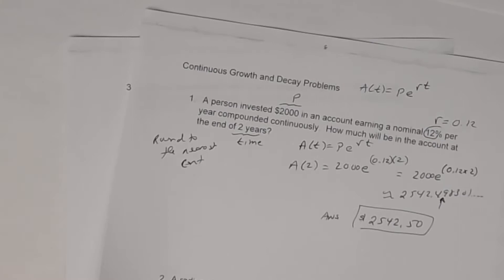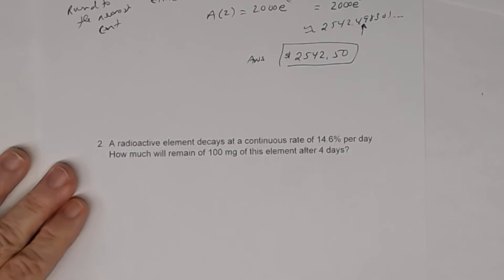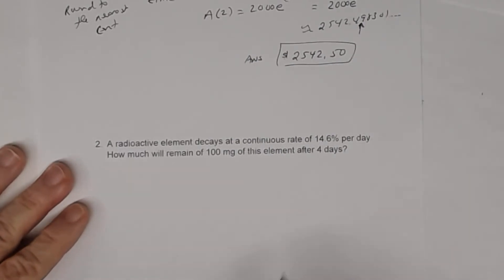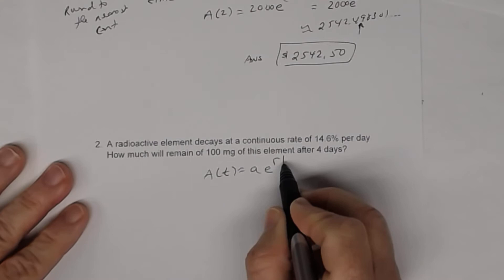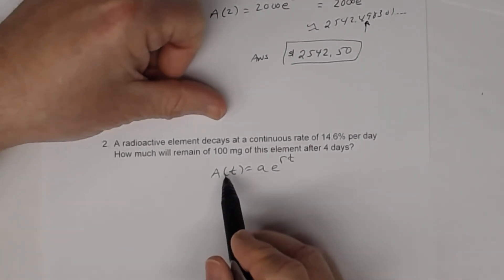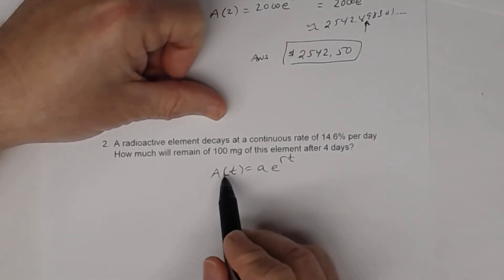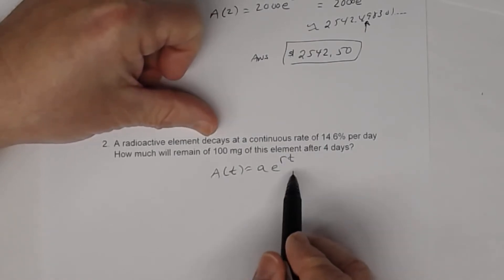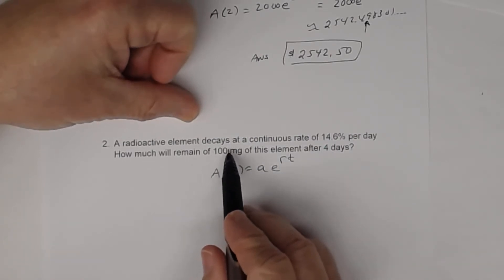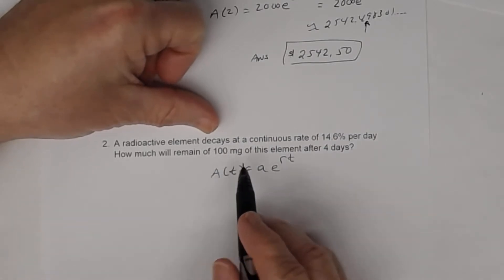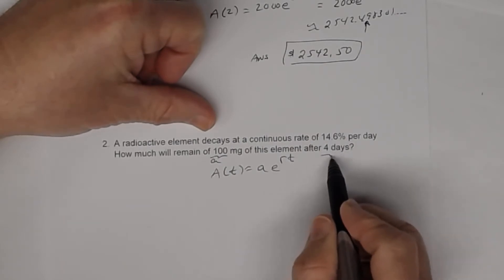Let's look at problem two. A radioactive element decays at a continuous rate. Since the word 'continuous' is used, I'll use A(t) = a times e to the rt. Note: the lowercase 'a' is the initial amount, and capital A is the amount at the end of that time period. The initial amount is 100, the time is 14 days, and the rate is 14.6% per day.